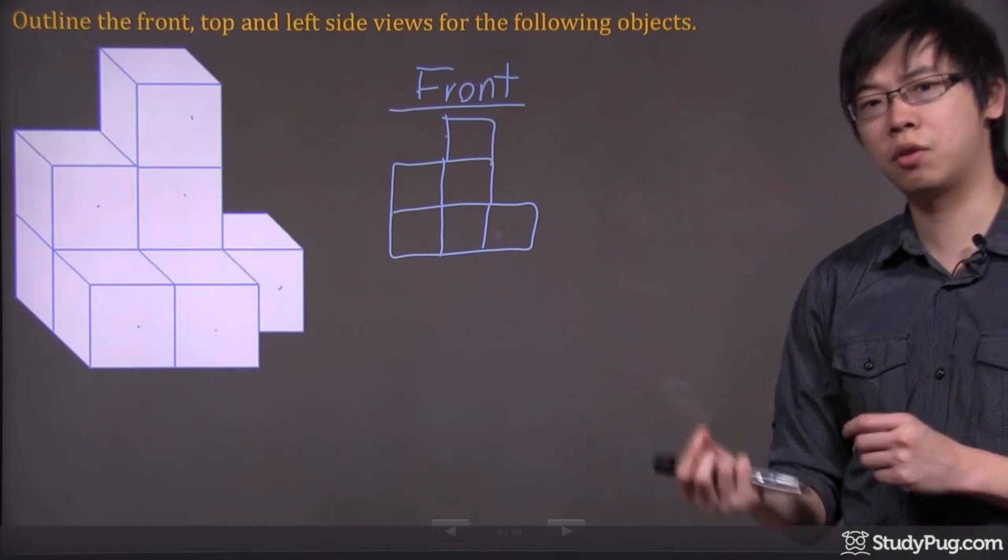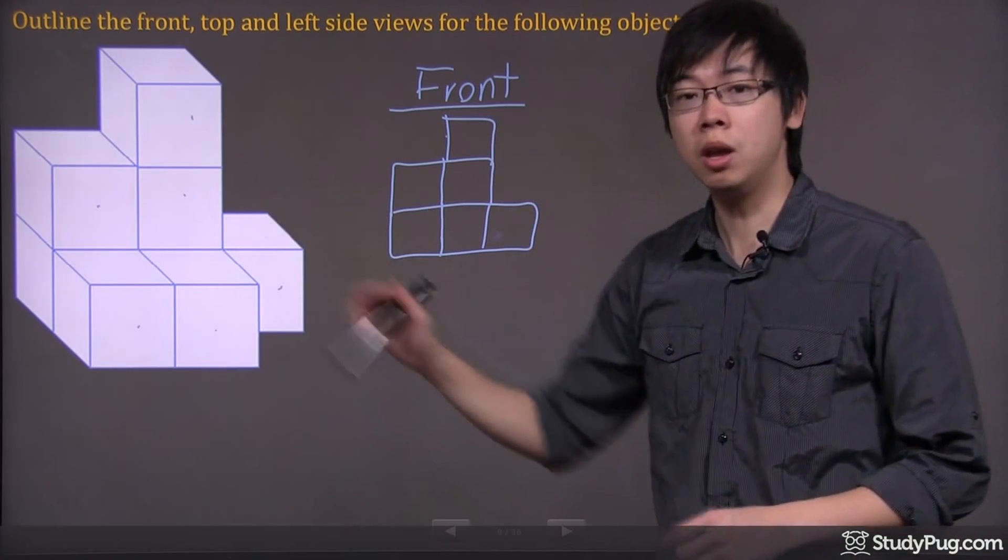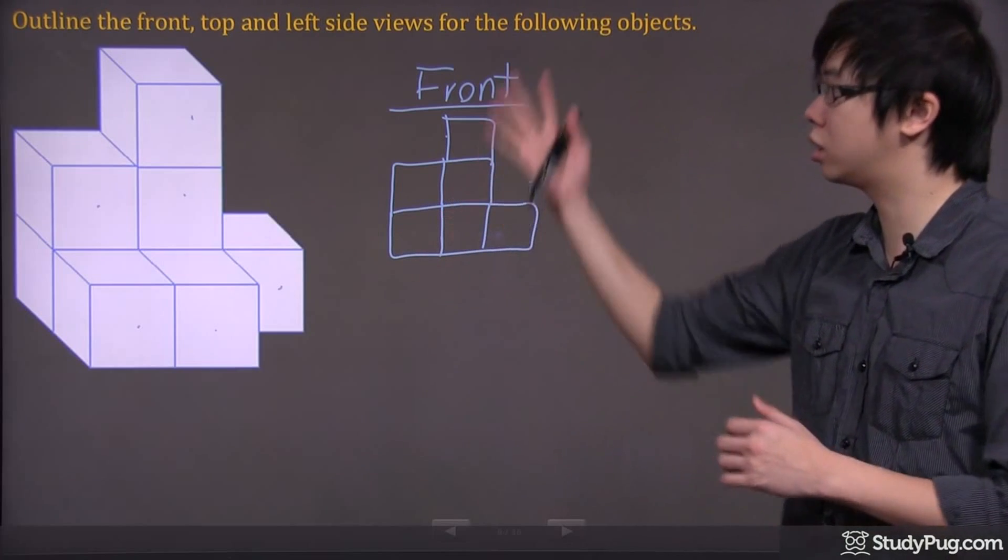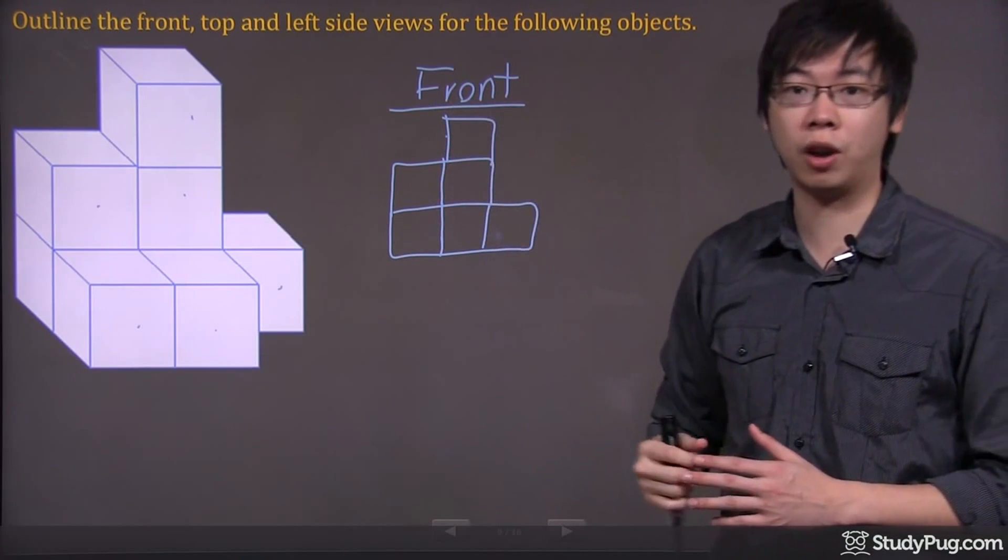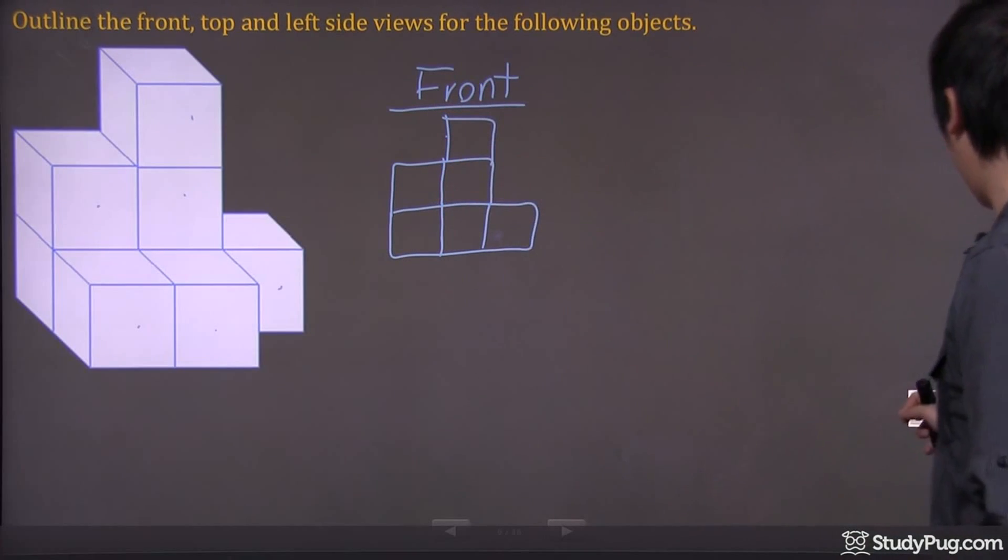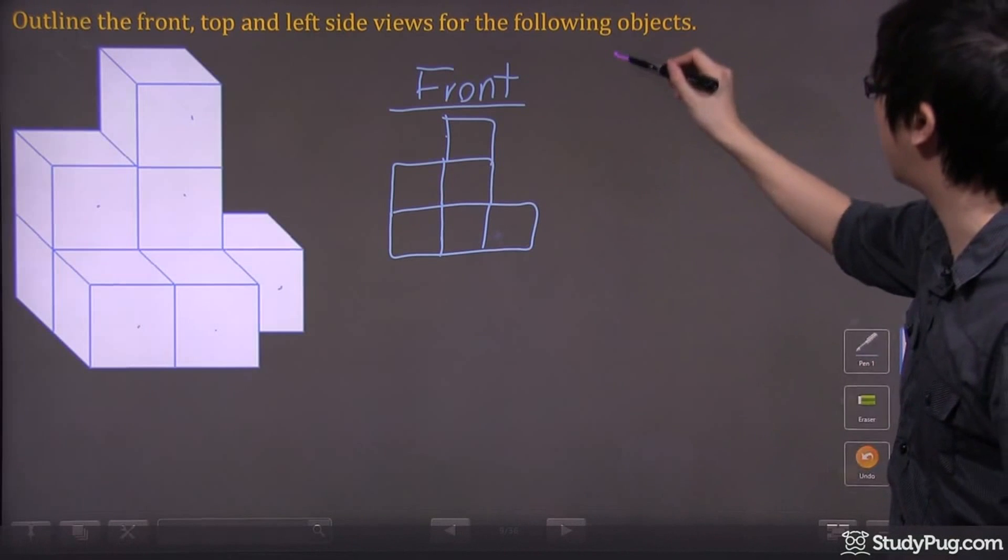It's good that you have a different colored pen, and just kind of dot them, and then just visualize and draw a two-dimensional view of the front. Then let's go to the top. Let's change the colored pen. Let's go to the top.